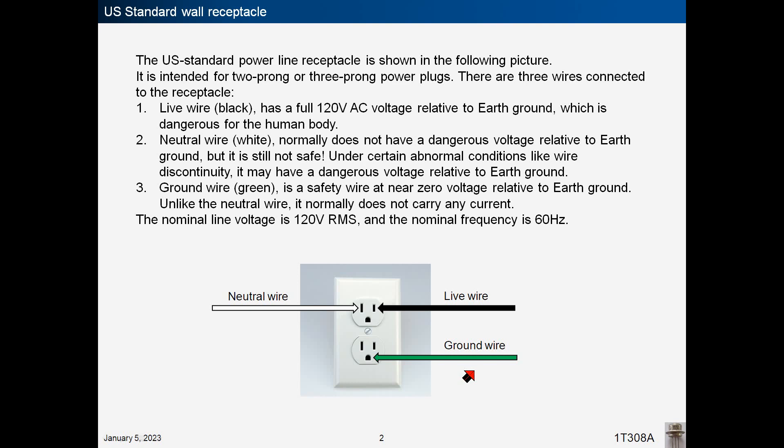The third is the green ground wire, which is a safety wire at near zero voltage relative to earth ground. Unlike the neutral wire, it normally does not carry any current. The nominal line voltage is 120 volts RMS, and the nominal frequency is 60 hertz.